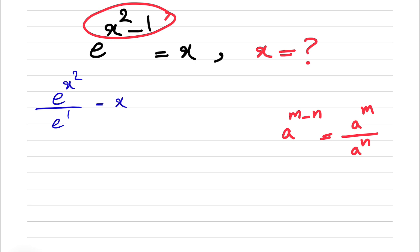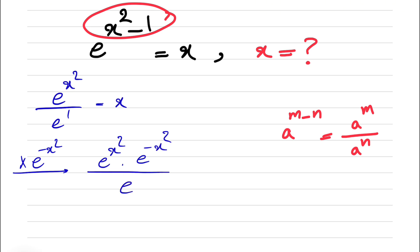So in order to get rid of the exponent of e or x squared in here, we're going to multiply each side by e to the power of minus x squared. So what we're going to get is we have e to the power of x squared times e to the power of minus x squared over e is equal to x times e to the power of minus x squared.